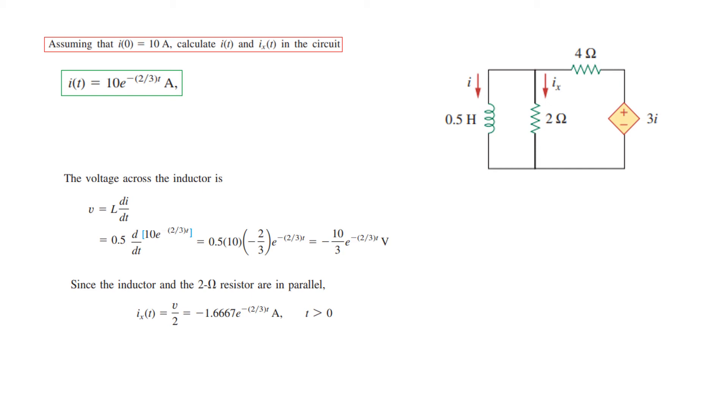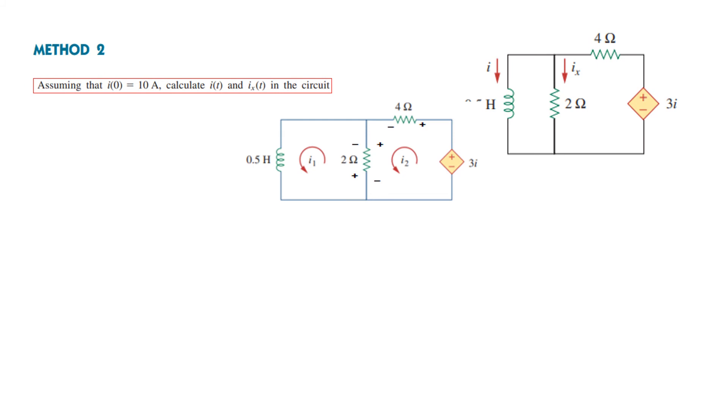But those of you who are not comfortable with the Thevenin resistance, you can solve this directly. So let's see that by Method 2. In Method 2 what we will do is simply write the KVL equations for both loops, loop 1 and loop 2.